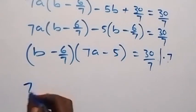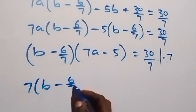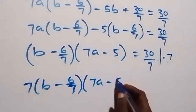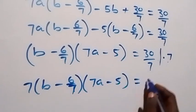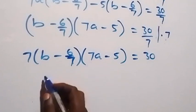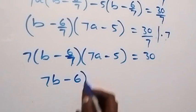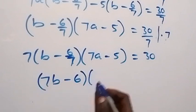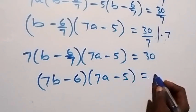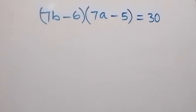Now multiply both sides by 7 to remove the denominator. On the left side, 7 times (b minus 6/7) becomes (7b minus 6). So we have (7b minus 6) times (7a minus 5) equals 30.